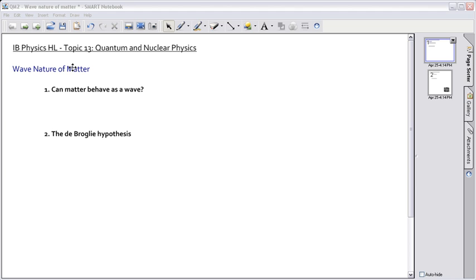Now before we were looking at how light can behave as either a particle or a wave, and the question might be, can matter, something with mass, can it also behave as a wave? We know that mass behaves as a particle already, and the question is, can it behave as a wave? And the answer, of course, is yes.